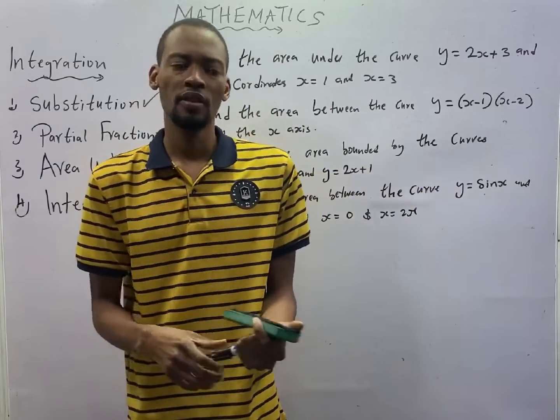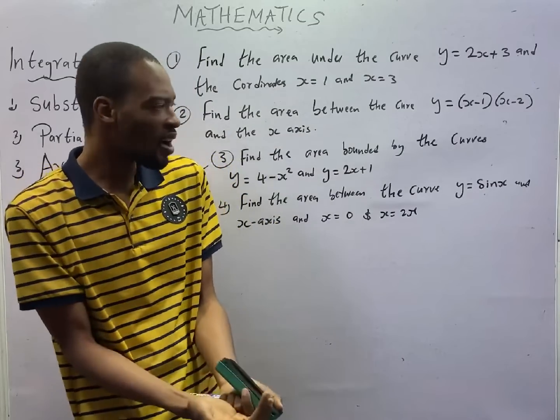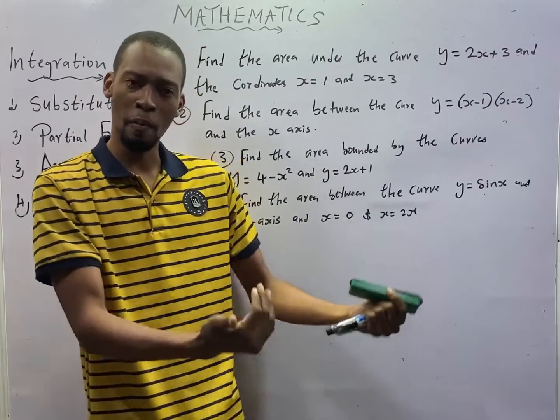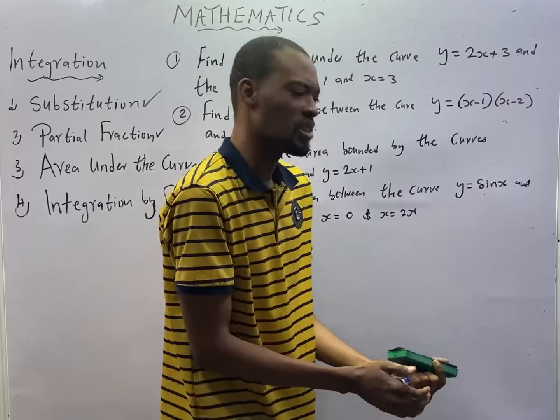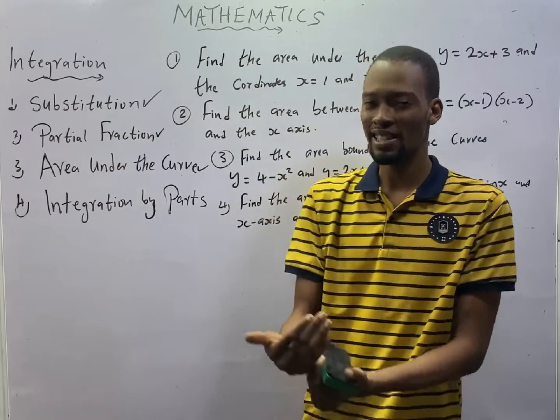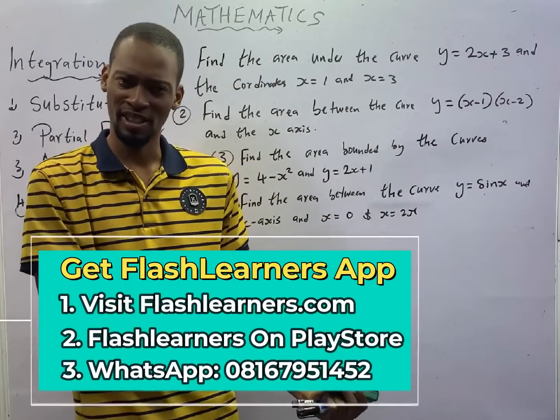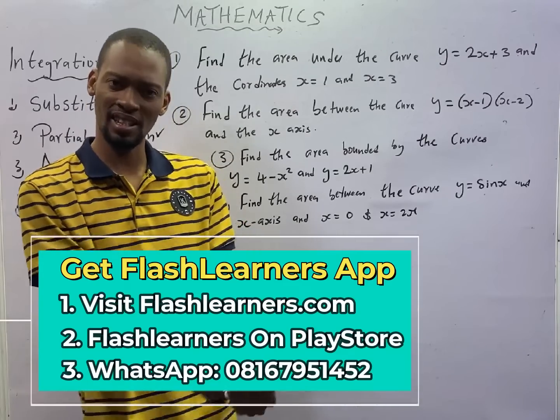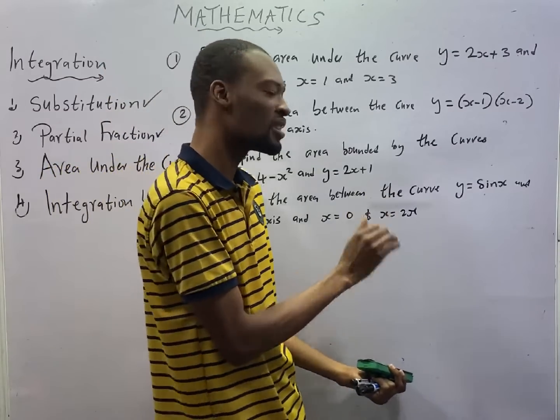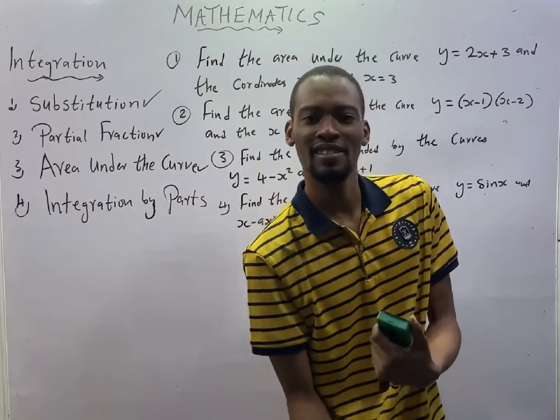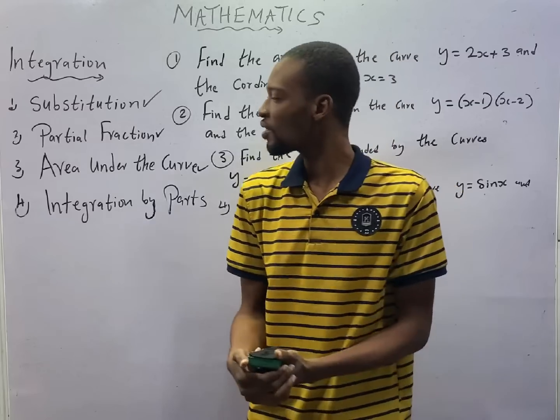If you are given velocity, when you differentiate velocity, you will get acceleration. Now, to get velocity back from the displacement back, you integrate. When you differentiate displacement, you are going to get velocity. Now, to get the displacement back, you integrate. So, they are the reverse of each other.